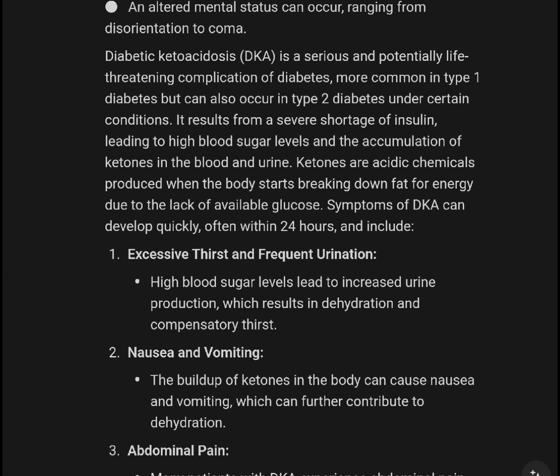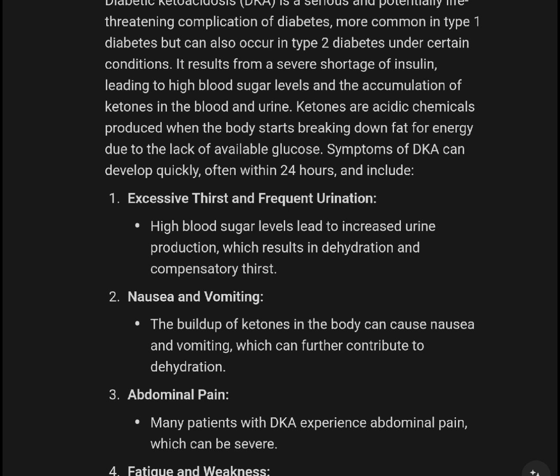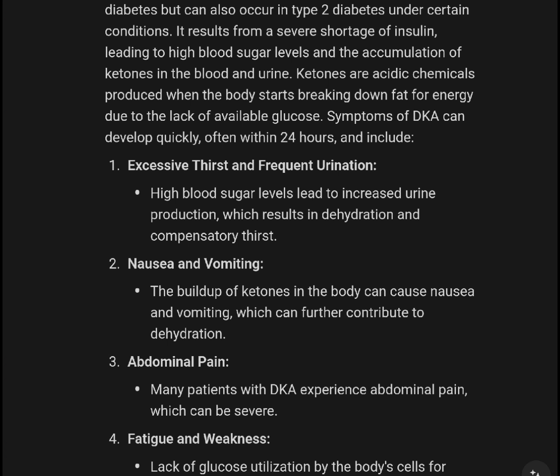DKA results from a severe shortage of insulin leading to high blood sugar levels and the accumulation of ketones in the blood and urine. Ketones are acidic chemicals produced when the body starts breaking down fat for energy due to the lack of available glucose. Symptoms of DKA can develop quickly, often within 24 hours, and include excessive thirst and frequent urination.